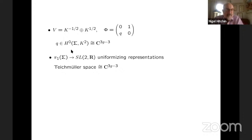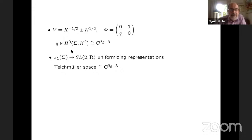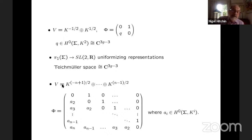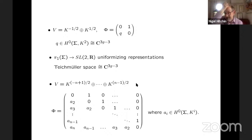You take a Higgs field which looks like this, where Q is a quadratic differential. Then on the surface sigma of genus G, there's a (3G−3)-dimensional space of quadratic differentials. And it turns out that what you get here is a (3G−3) complex-dimensional space of representations, which actually fills out a whole connected component of the space of representations into SL(2,ℝ) up to equivalence. So this is Teichmüller space — all of these representations in this component are uniformizing representations. They come from a metric of constant negative curvature.